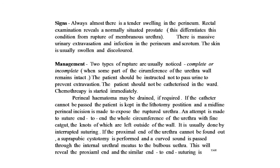Management: two types of rupture are noticed — complete or incomplete. When some part of the circumference of the urethral wall remains intact, the patient should be instructed not to pass urine to prevent extravasation and should not be catheterized in the ward. Chemotherapy (antibiotics and other drugs) is started immediately. Perineal hematoma may be drained if required.